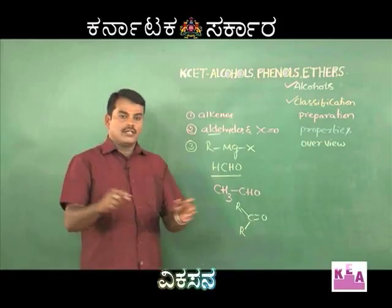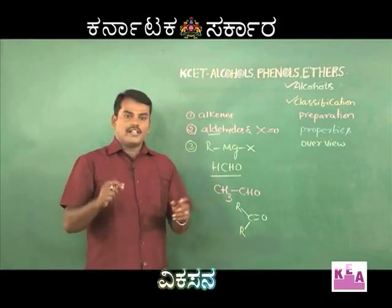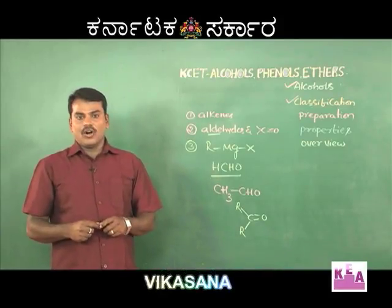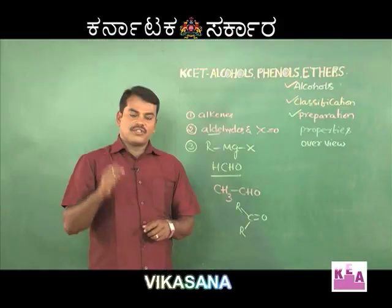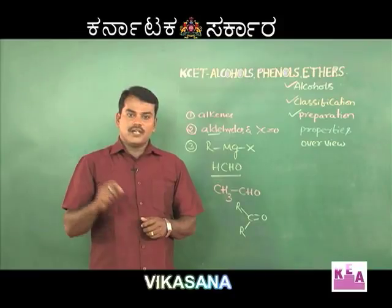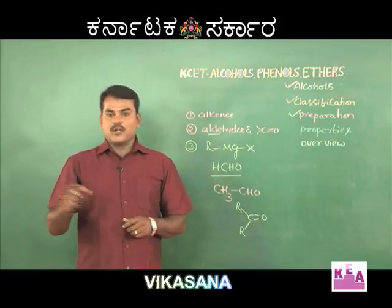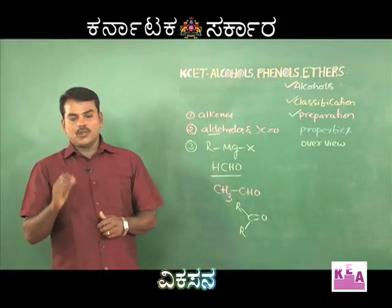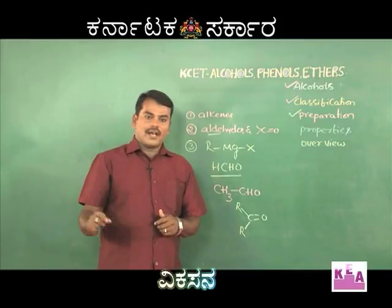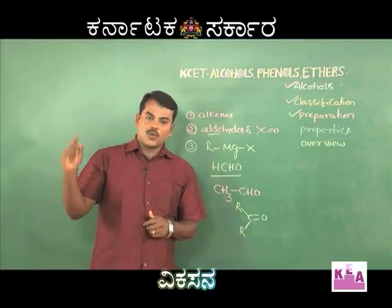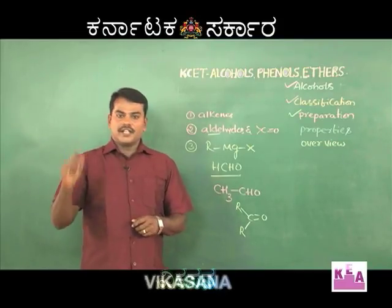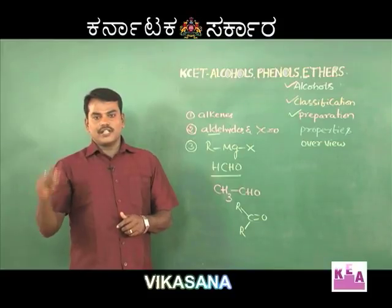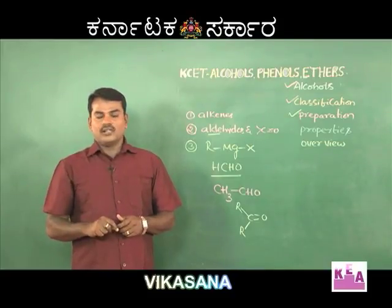This covers the various methods of preparation and manufacture of alcohol. Alcohols generally react with sodium metal, liberating hydrogen gas. This is the first property of alcohol. Any alcohol on reaction with sodium metal shows bubbling of hydrogen gas, and this is generally used as a test for alcohol.